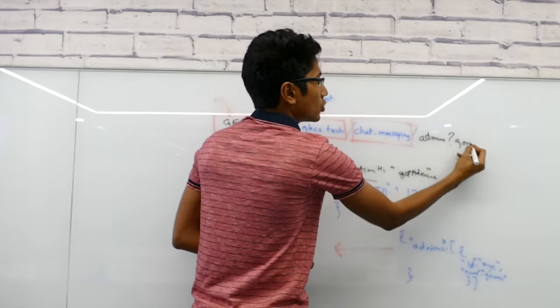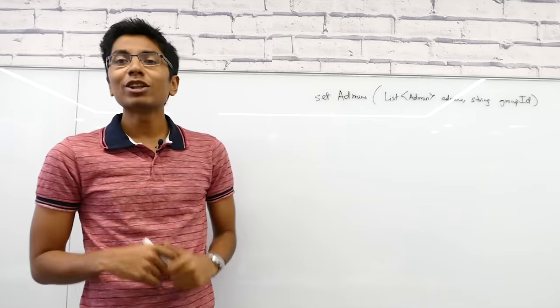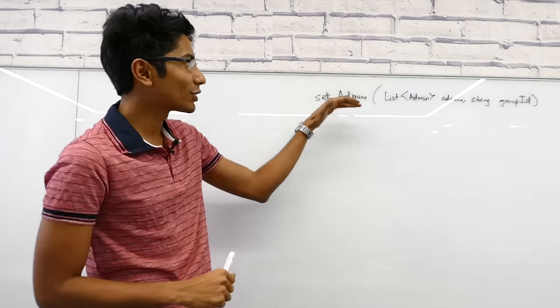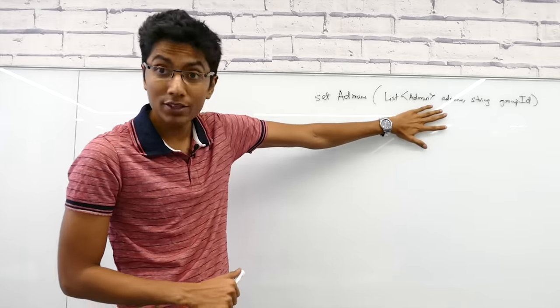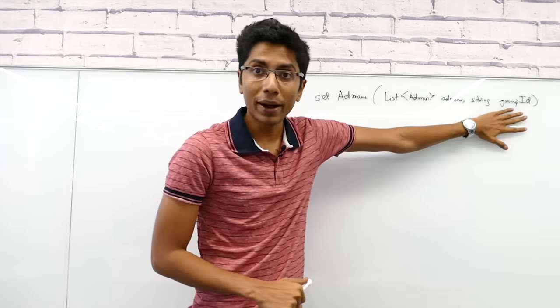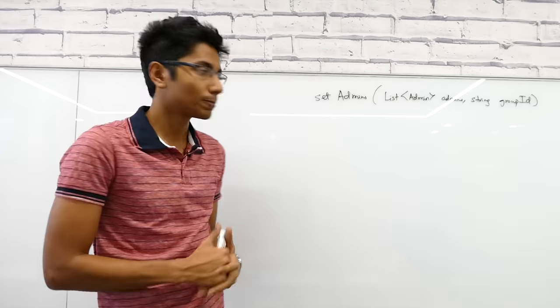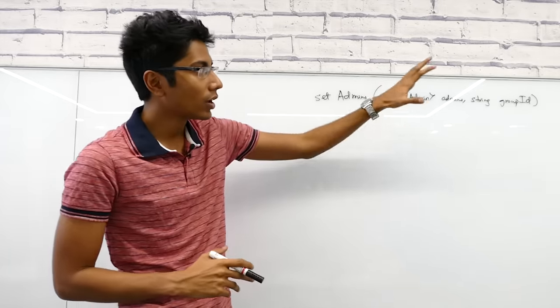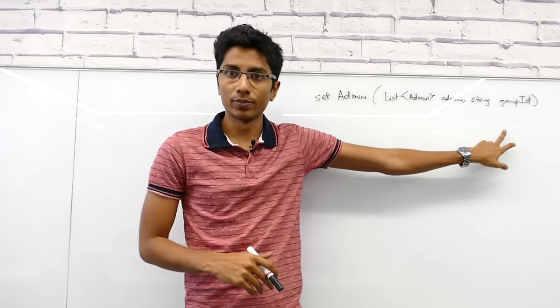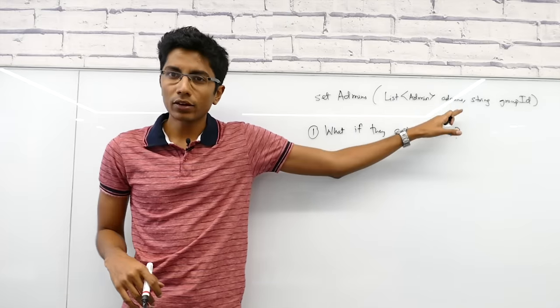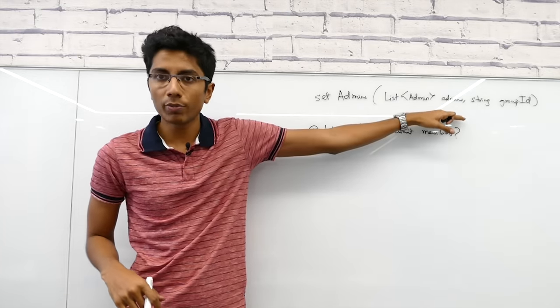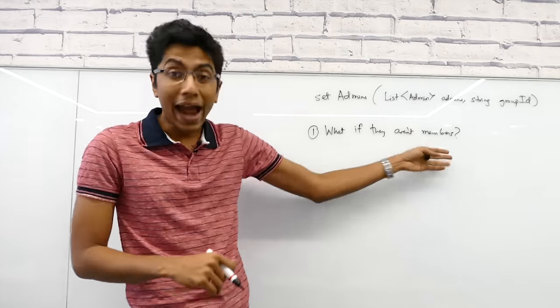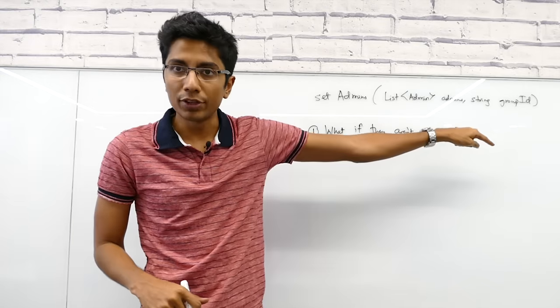Now let's get into the more subjective and major issues we have when designing APIs. We have this function set admins. It takes a list of admins and has a group ID in which it's going to set these guys as administrators. Let's go for the bad cases. What if these admins are not members of this group? In general, they should return an error saying this person is not a member, so this person cannot be an admin. However, depending on the use case, you might expect to add this member and then make them an admin.